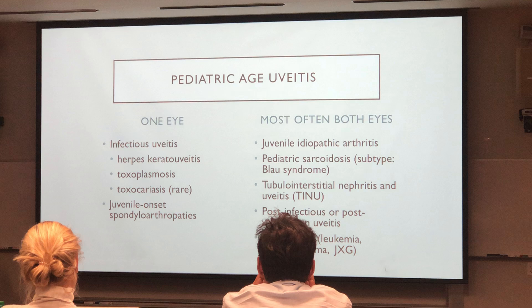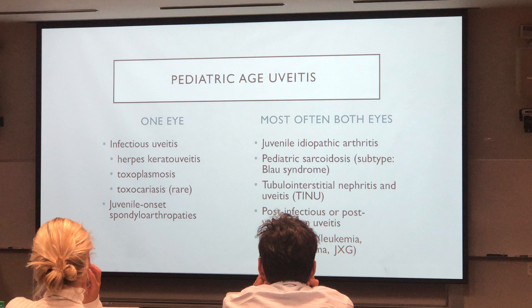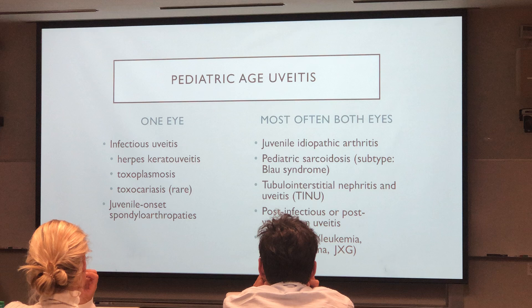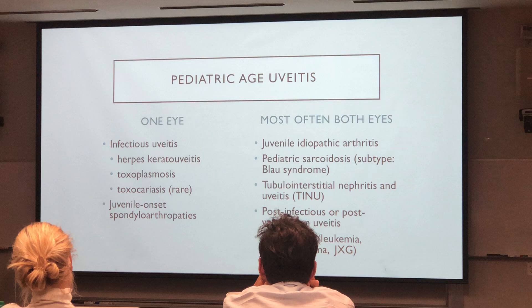If your young child has involvement in both eyes, juvenile idiopathic arthritis is the most common condition associated with anterior uveitis. Much less common is pediatric sarcoidosis, which often mimics juvenile idiopathic arthritis. You should be aware there is a form of pediatric sarcoidosis that is almost of dominant inheritance — Blau-Jabs syndrome. Tubular interstitial nephritis can occur in kids and adults, as well as other conditions like post-infectious uveitis or uveitis that may occur after vaccination, and masquerade syndrome.